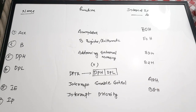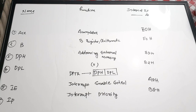The B register is also used for arithmetic functions. Especially while performing division, the divisor is placed in the B register, and after division the remainder is automatically stored back into the B register. So for division operations, the B register is required and the remainder is stored there. The address of the B register is F0H.